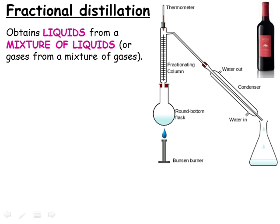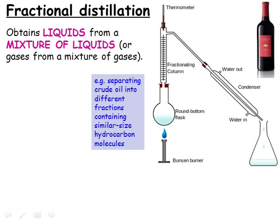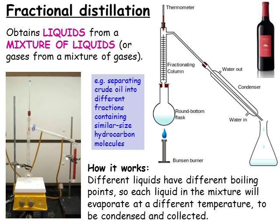Fractional distillation works in a very similar way, and is used to separate the liquids in a mixture of liquids — for example, separating the hydrocarbons in crude oil into different fractions. It can also be used to separate the alcohol from the water in an alcoholic solution, such as wine. Bioethanol, for use as a fuel, is separated from the solution in which it's made in this way. At very low temperatures, it can also be used to separate the gases in a mixture of gases — this is how nitrogen, oxygen and the noble gases are obtained from the air. Fractional distillation works on the principle that the different liquids in the mixture will have different boiling points, due to the different size of the molecules and the strength of their attractive forces. As the mixture of liquids is heated up, each liquid reaches its boiling point at a different temperature, and is turned into a gas to be cooled in the condenser and collected separately.